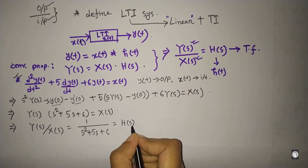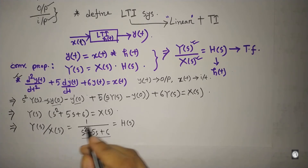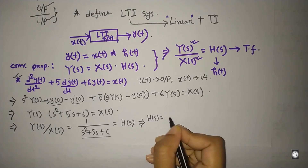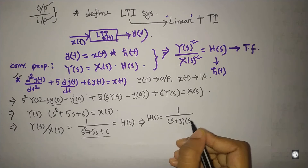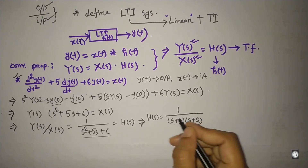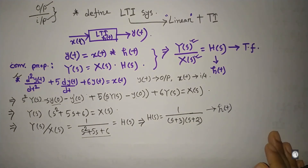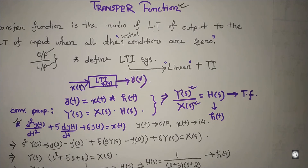To represent this transfer function in the time domain, we apply the inverse Laplace transform. We factor H(s) = 1/(s² + 5s + 6) = 1/((s + 3)(s + 2)), which has simple poles. Using the inverse Laplace, we get the time domain representation h(t). This is the basic concept of the transfer function. Thanks for watching this video.